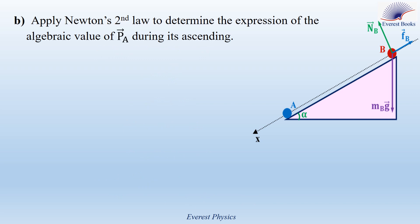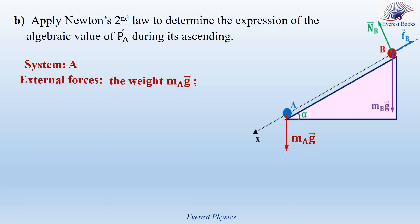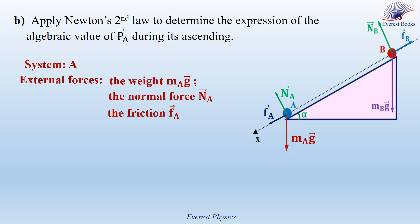Question 2: Apply Newton's second law to determine the expression of the algebraic value of the linear momentum of A during its ascending. The system is A. The external forces acting on A are its weight, directed vertically downward, the normal reaction perpendicular to the surface of the incline, and the friction force FA. Since A moves from the bottom of the incline towards the top, and friction is always opposite to its motion, FA is directed along the positive x-axis.